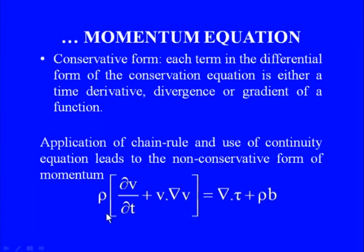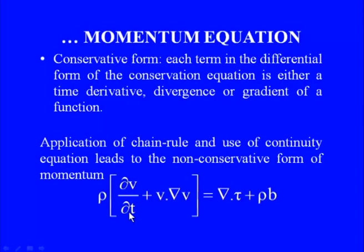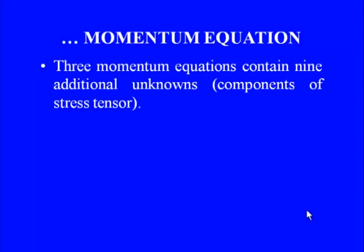Using the chain rule of differentiation and the continuity equation, we can obtain the non-conservative form: ρ(∂v/∂t + v·∇v) = ∇·τ + ρb. The left-hand side contains local acceleration ∂v/∂t and convective acceleration v·∇v. In CFD we primarily focus on the conservative form of the momentum equation.